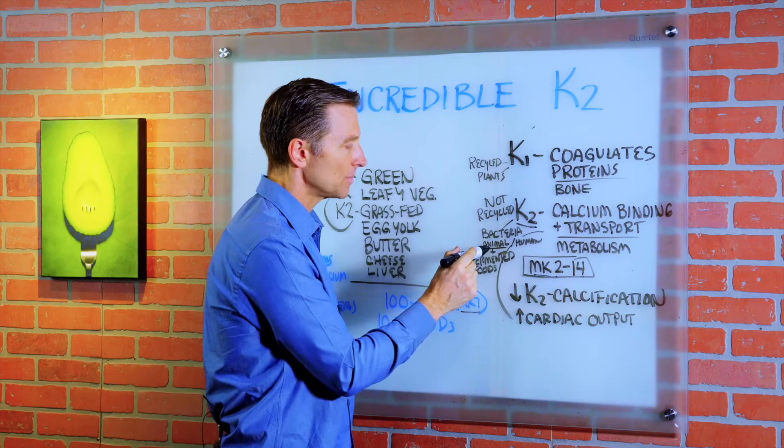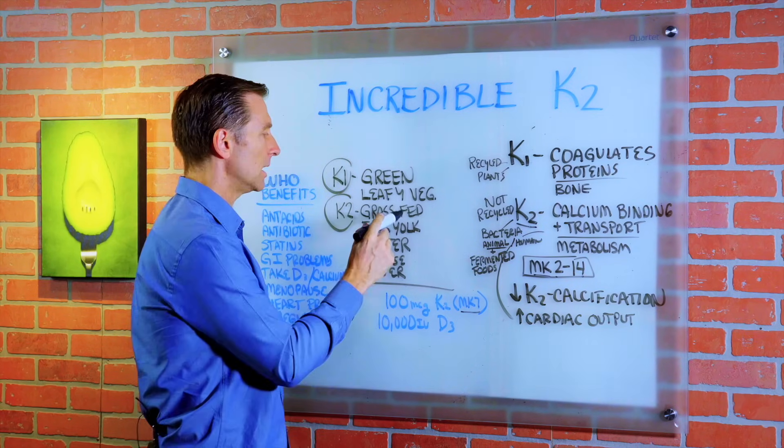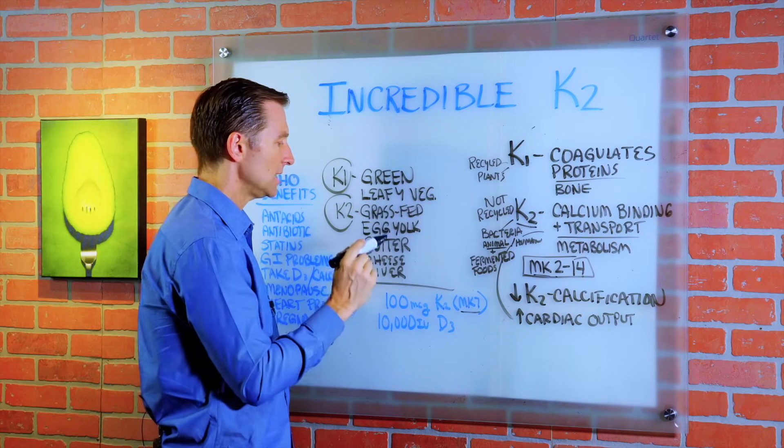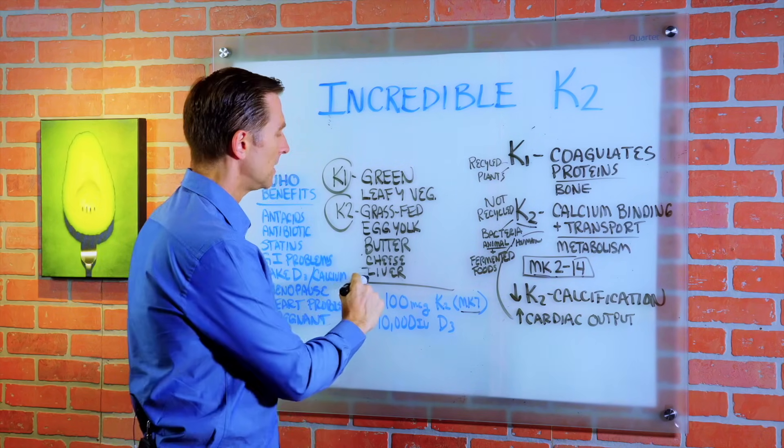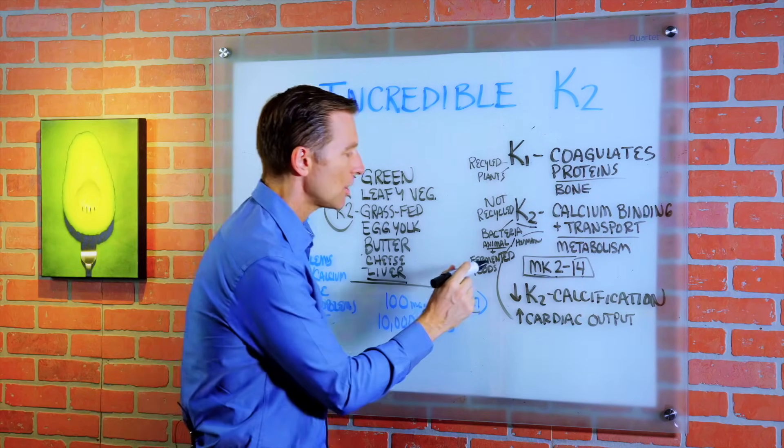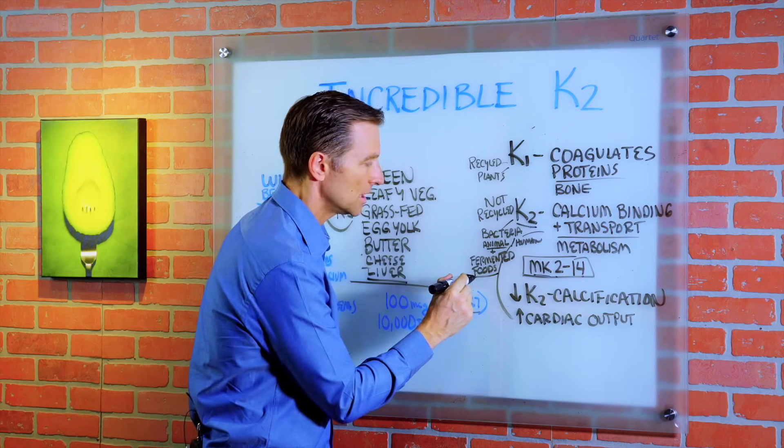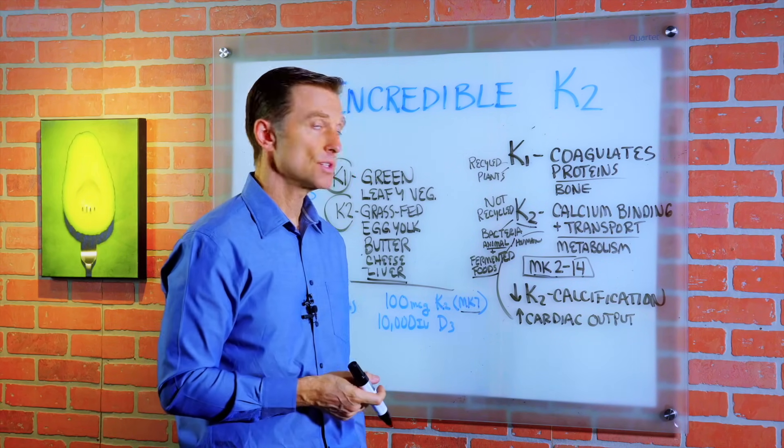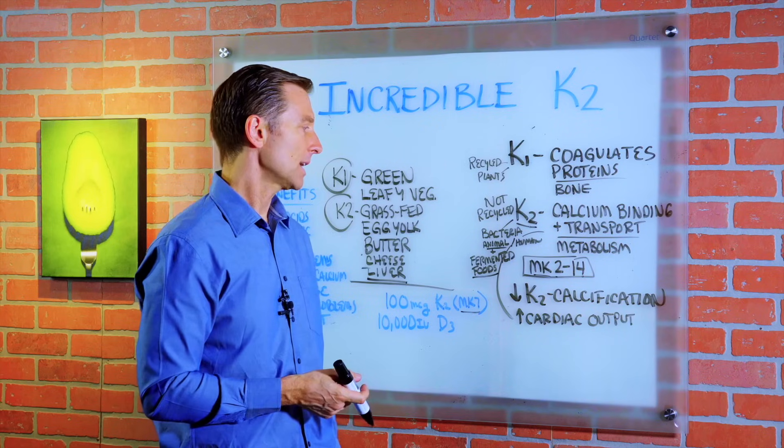But in grass-fed animal products, in liver, egg yolks, meats, cheese, certain cheeses, and also fermented foods. There's a product called natto, which is a fermented soybean. I think they use it in Japan. That has vitamin K2.